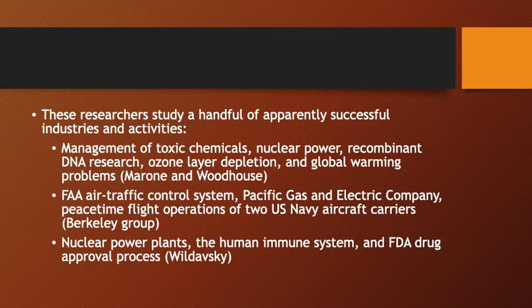A second batch of organizational and technology systems includes the FAA air traffic control system, the Pacific Gas and Electric Company, and peacetime flight operations on two U.S. Navy aircraft carriers - investigations carried out by the Berkeley Group. Wildavsky considers nuclear power plants, the human immune system, and the FDA drug approval process.